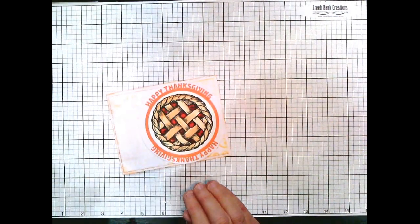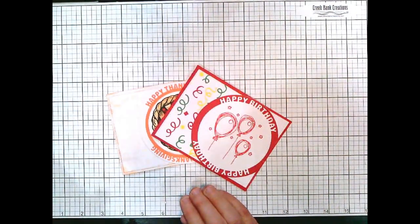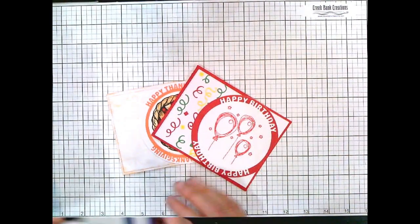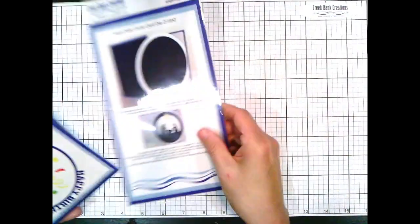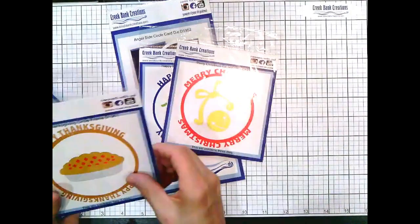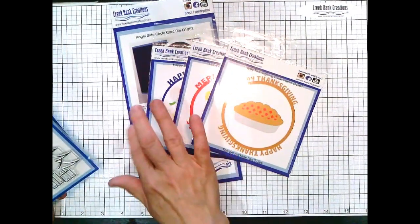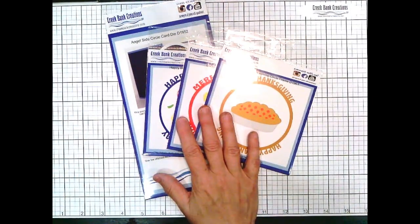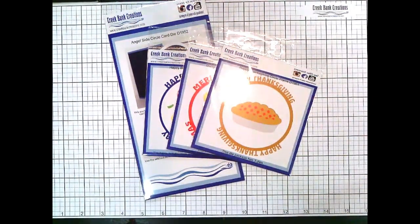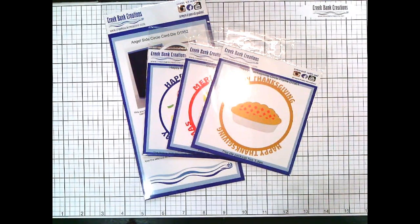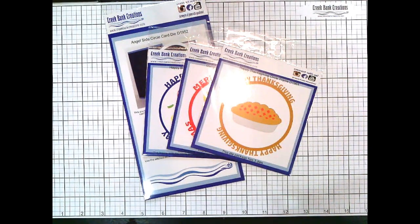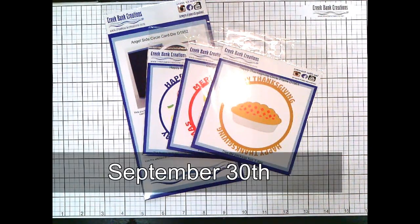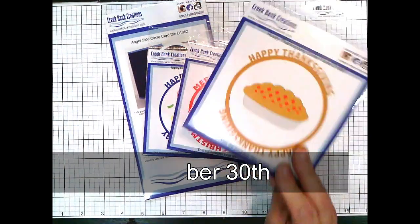You can add other things to it. We do have a special right now that we're running until October 1st. If you buy the pieces online, you can buy the dies - that would be four dies, the base die and the three accent dies. Regular price would be $52, and then you would have to pay freight. And we're offering it until the end of the month, which is September 30th, for $42 and we'll ship it for free.